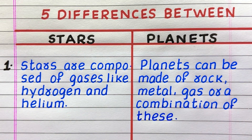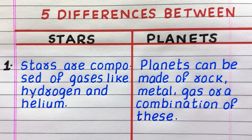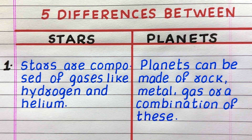First difference: stars are composed of gases like hydrogen and helium, while planets can be made of rock, metal, gas, or a combination of these.